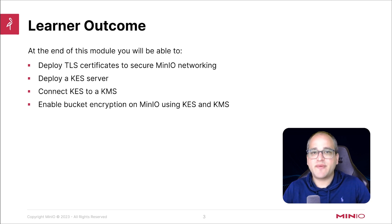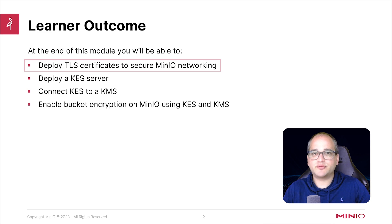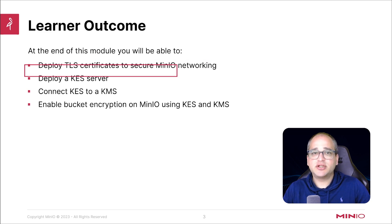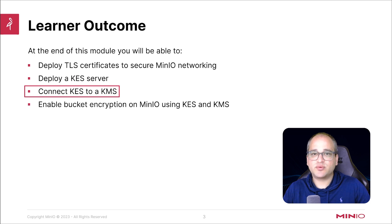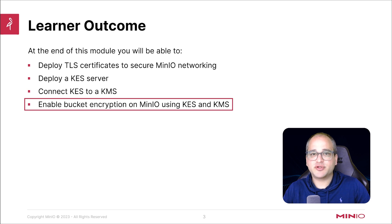From an outcomes perspective, once you finish this series, you should be able to do the following things: deploy TLS certificates in your MinIO cluster, deploy KES itself, connect KES with a KMS — that's Key Management Service — and then finally enable bucket encryption by connecting KES and KMS together.